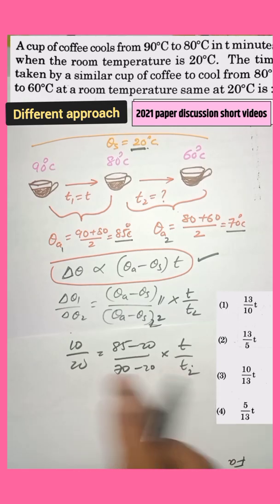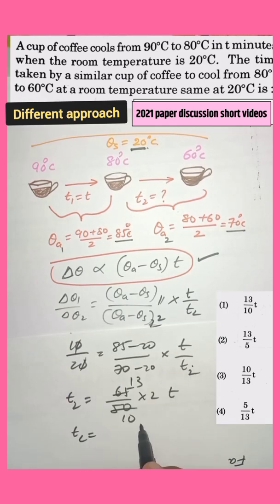So we have to find out T2 in this case. T2 comes to this side, and simplifying, therefore your answer is 13 by 5 into T. Thank you very much.